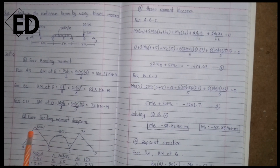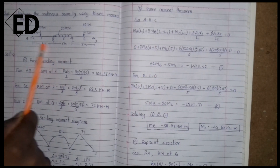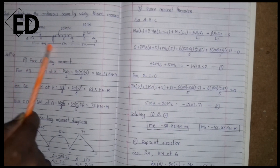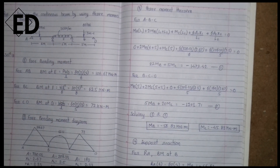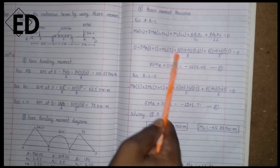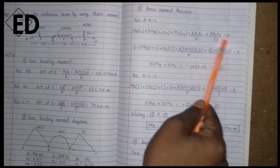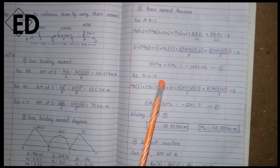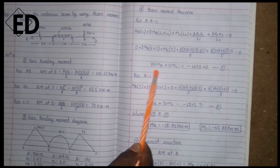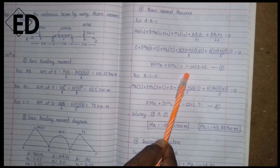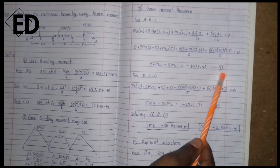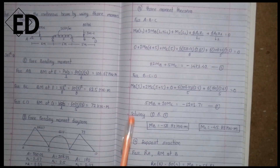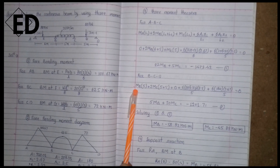Here, L1 is the length between A and B, and L2 is the length between B and C. Substituting all values of 6A1·x1/L1 and 6A2·x2/L2 and solving, we get: 22·M_B + M_C = −1479.42. This is equation number one.